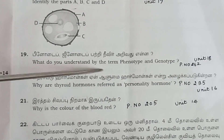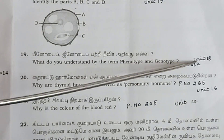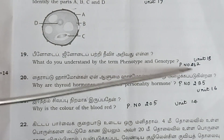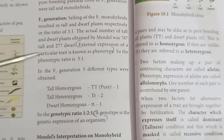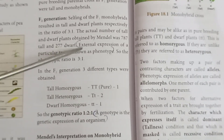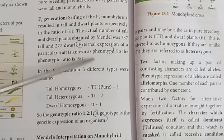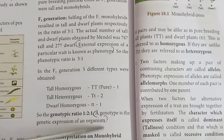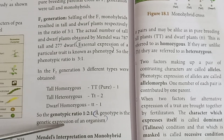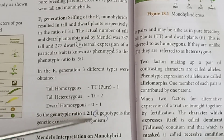Question 19: What do you understand by the terms phenotype and genotype? Unit 18, page number 262. Phenotype is the external expression of a particular trait of an organism. Genotype is the genetic expression of an organism.